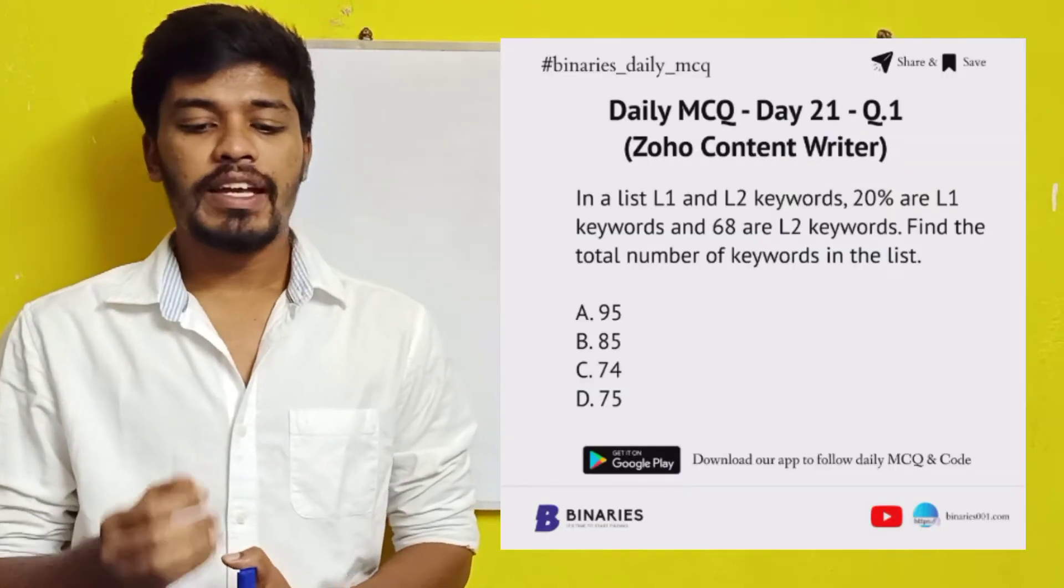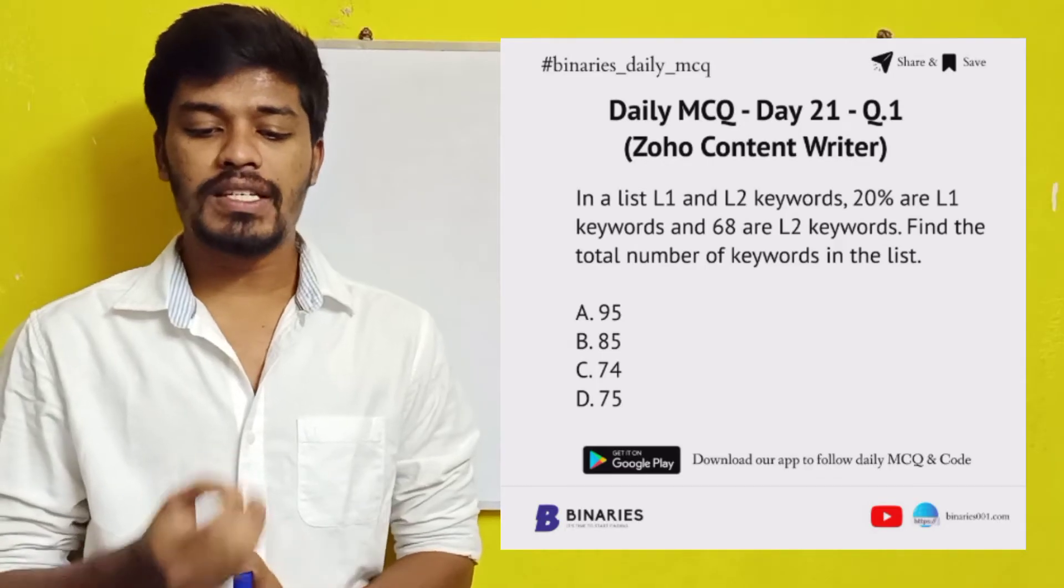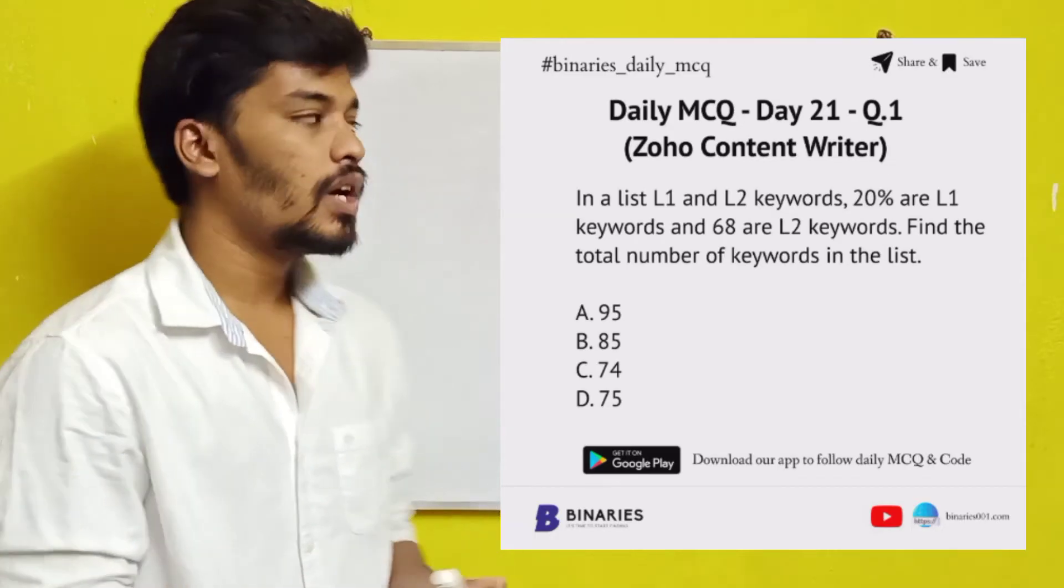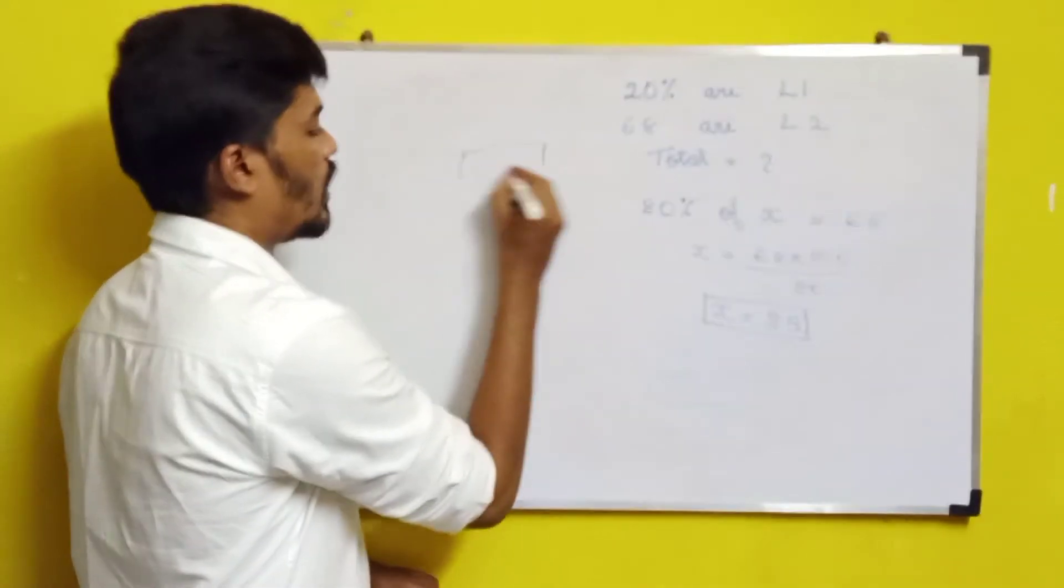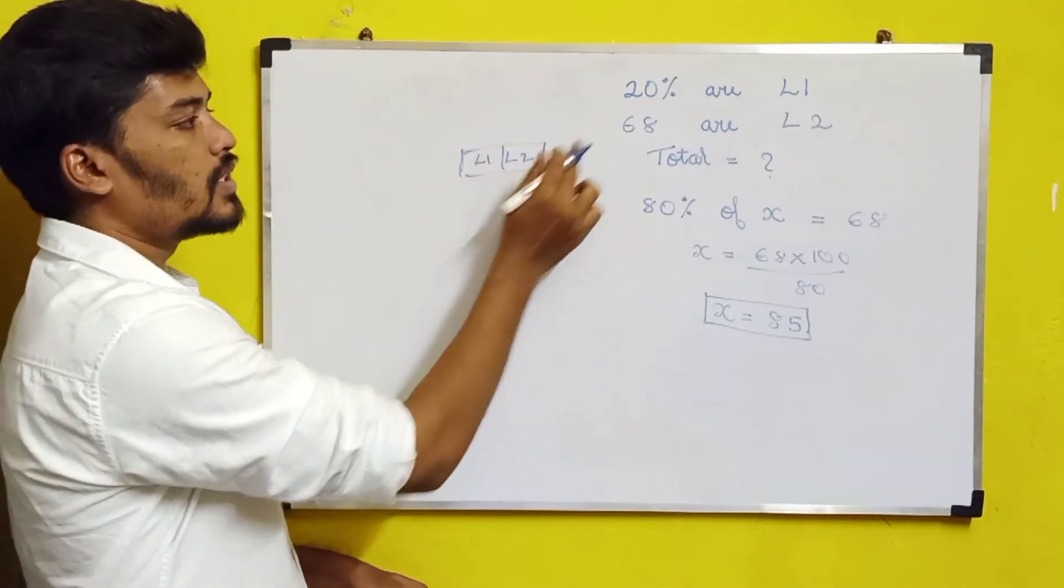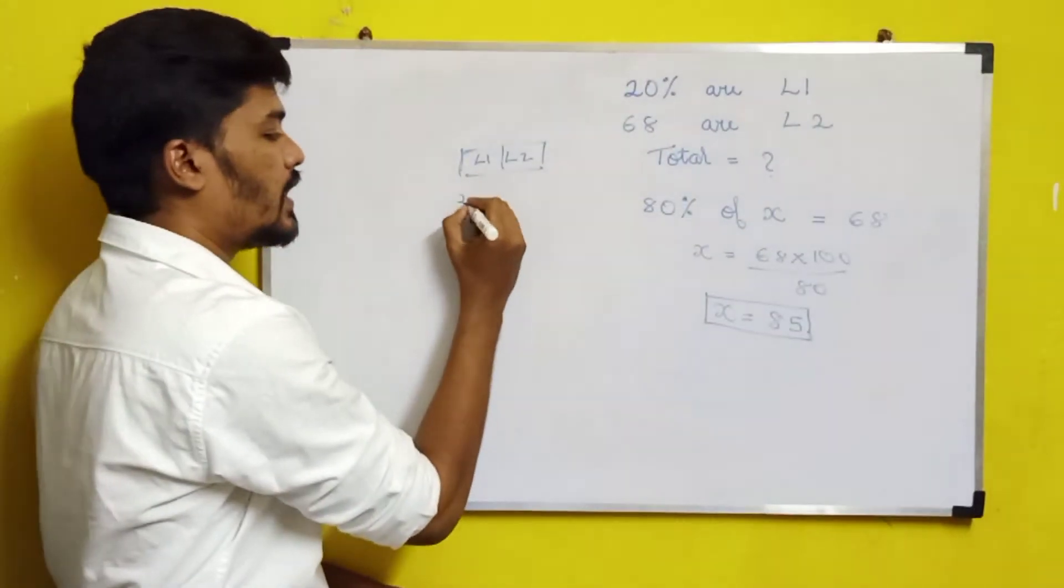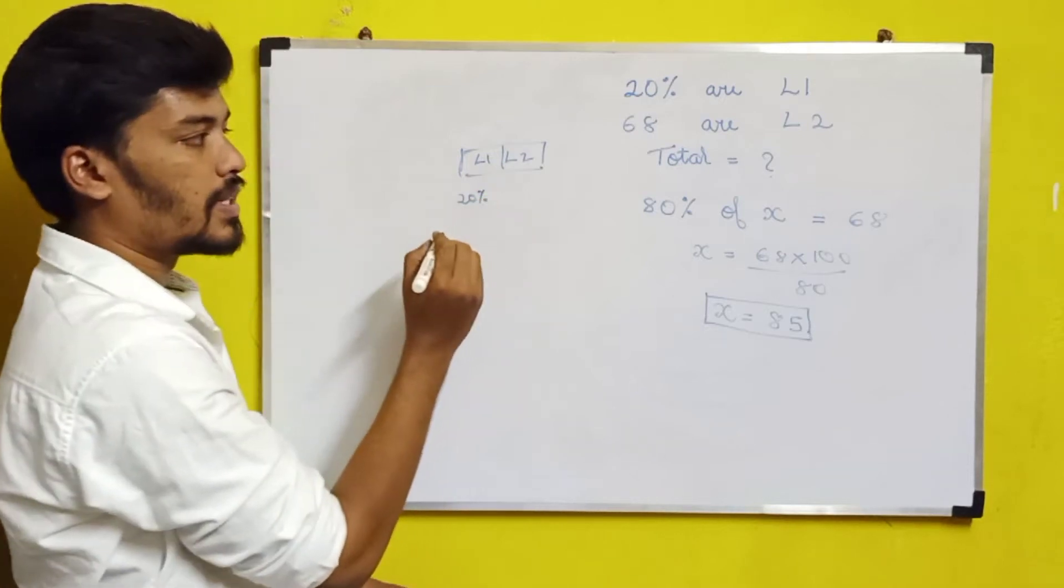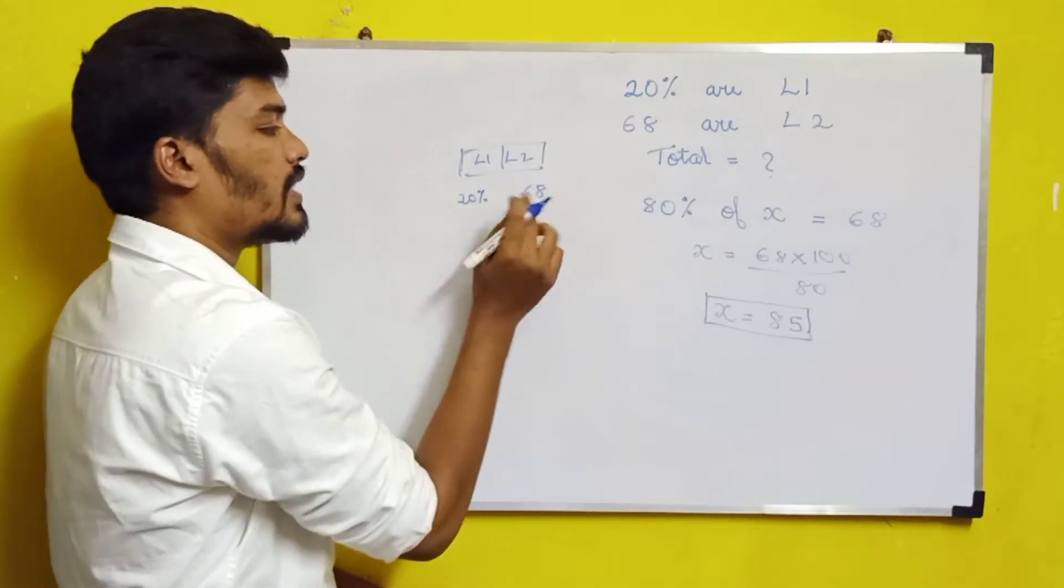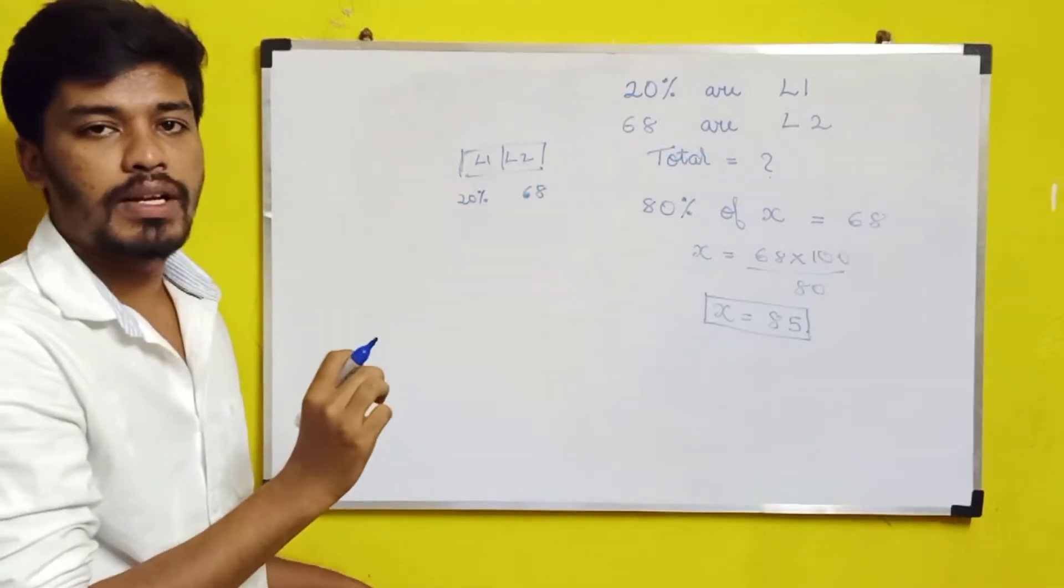Now let's see the first question. In a list of L1 and L2 keywords, 20% are L1 keywords and 68 are L2 keywords. Find the total number of keywords in the list. So L1 is given as a percentage (20% of overall keywords) and L2 is given as a number (68 keywords). We have to find the total number of keywords in the list.